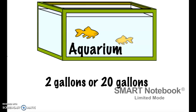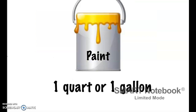This aquarium looks pretty large. What do you think would be the best estimate — two gallons or 20 gallons? I would say 20 gallons. Two gallons is not going to be enough and the fish are not going to survive. A can of paint that you would get from like Lowe's or Home Depot — would the best estimate be one quart or one gallon? I would say one gallon for sure. You need enough in order to paint all the walls in the room.